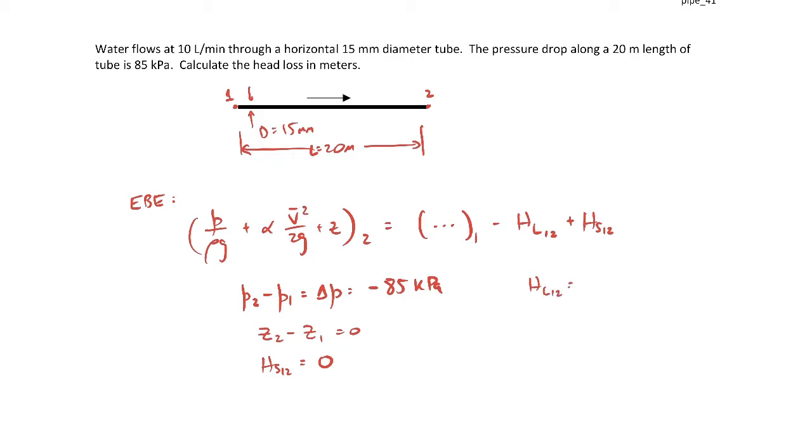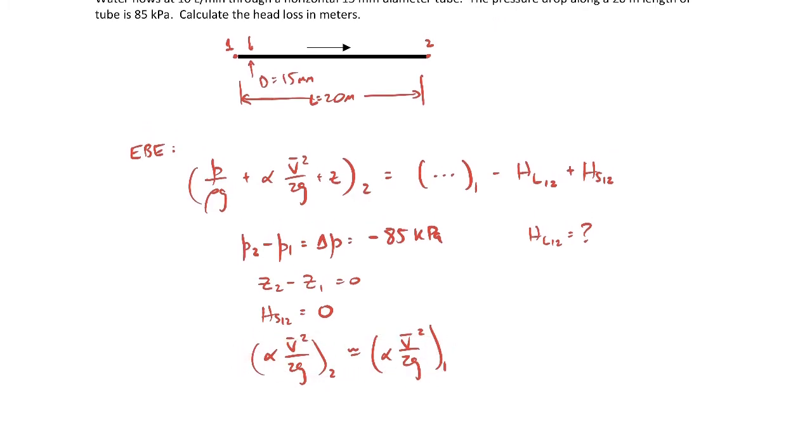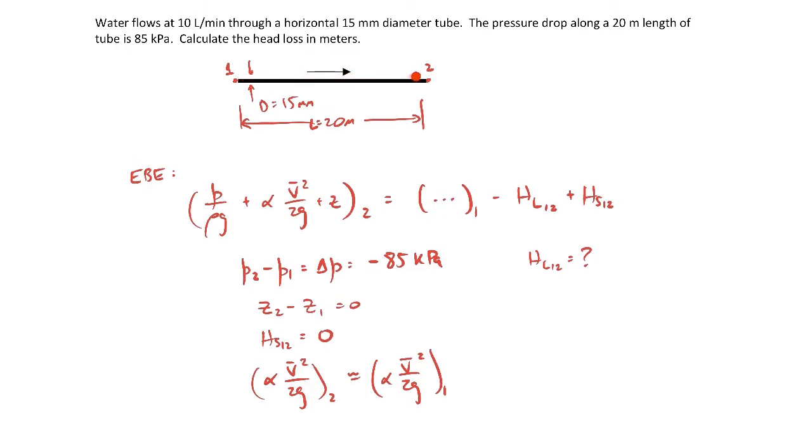We can evaluate the velocity head terms. Let me write these down. I'm setting these equal to one another because the pipe has a constant diameter and constant mass flow rate. If the mass flow rate is the same at one and two and the diameter is the same, then the average velocities will be the same. I'm assuming that alpha two and alpha one, the kinetic energy correction factors, are also the same.